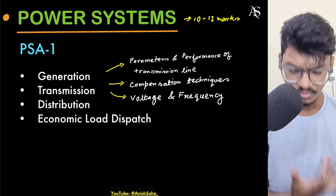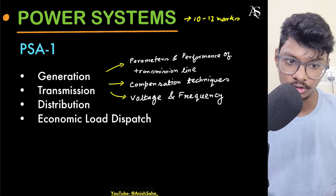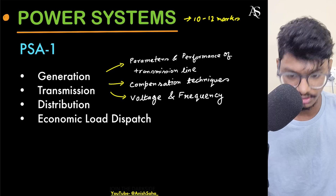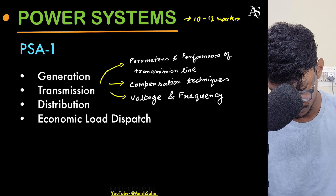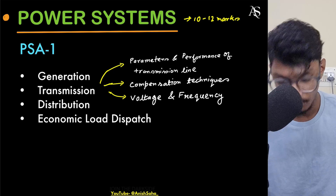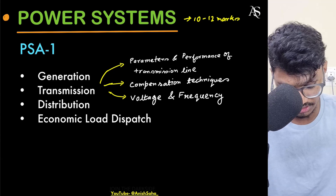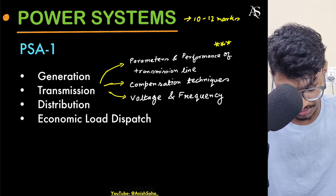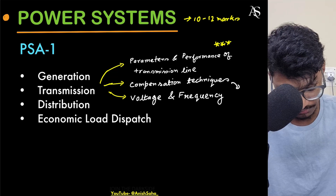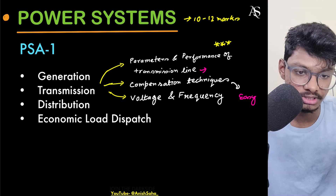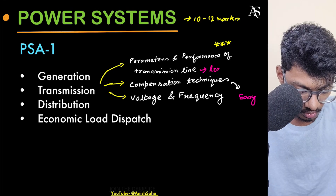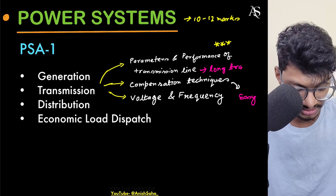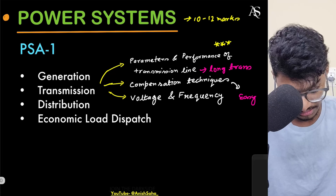Inside PSA1, parameters and performance of transmission lines are actually very important. Focus on long transmission lines — you can skip short and medium transmission lines since numericals mainly come for long transmission lines. Compensation techniques are pretty easy, so don't skip them.